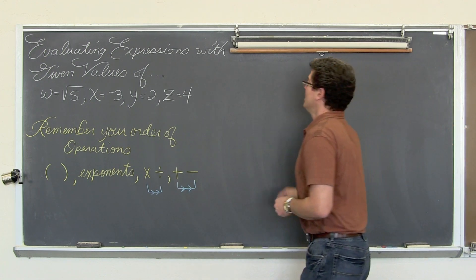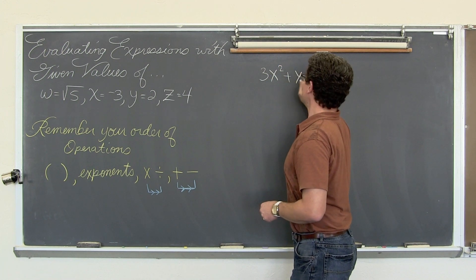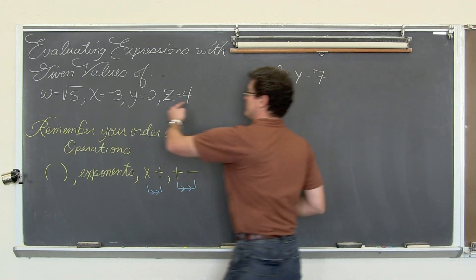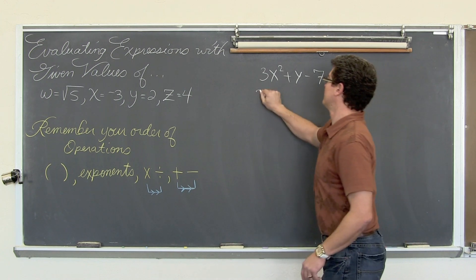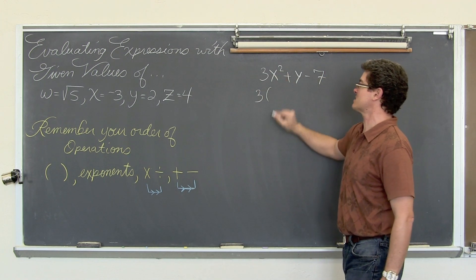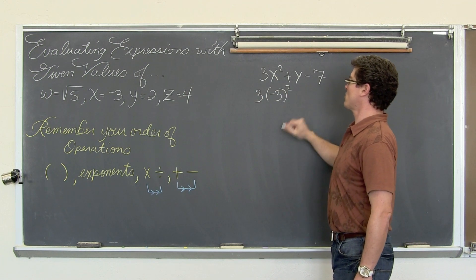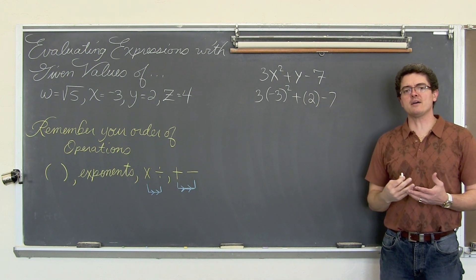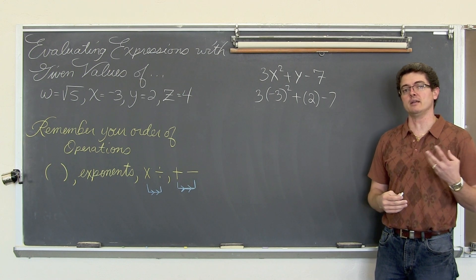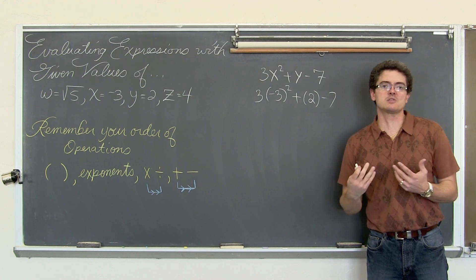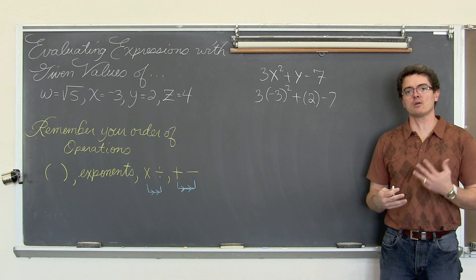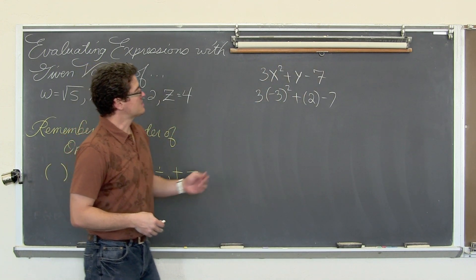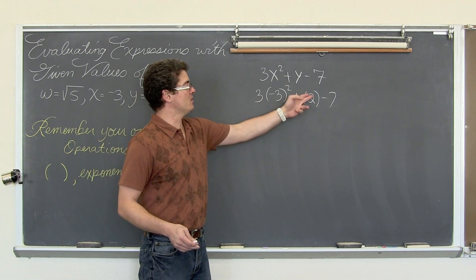Actually, it is our second now, right? We have three x squared plus y minus seven. So that is our expression. We are going to plug in our numerical values: three parenthesis negative three squared, plus y which is equal to two, minus seven. I am going to do these math operations one step at a time. Because the more students shortcut their work, the more likely they are to make careless mistakes and consistently get wrong answers.